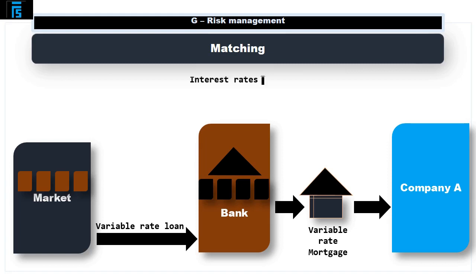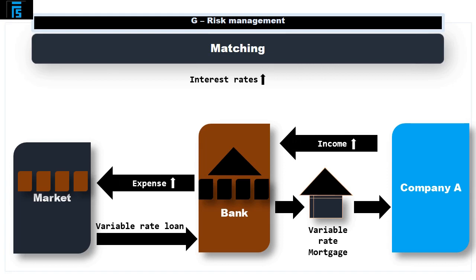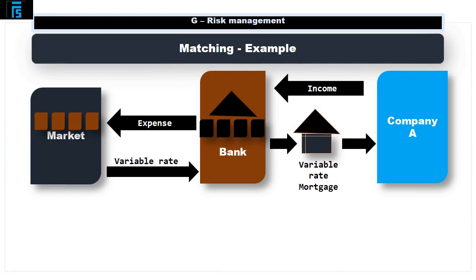If the bank were to do this, then as interest rates rise in the market, the income from our customer rises because we charge them more, and our own finance charges will rise similarly. This means the bank's profit — the difference between income and expenses — will stay approximately the same. For example, suppose the bank agrees the mortgage with their customer and the variable rate of interest at that point is 5% per annum, and the bank finances that mortgage by obtaining a loan from elsewhere at a variable rate of 3% per annum.